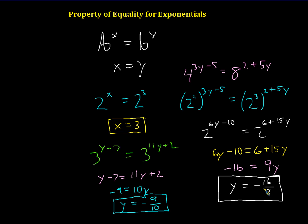Anyways, this is reduced. This is as simple as it gets. And again, if we plugged in negative 16 ninths here and here, we should be able to show that these two sides are equal to each other. Okay, that's all I got for you on property of equality for exponentials.